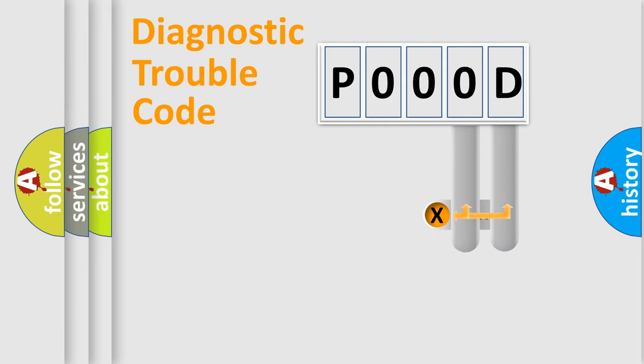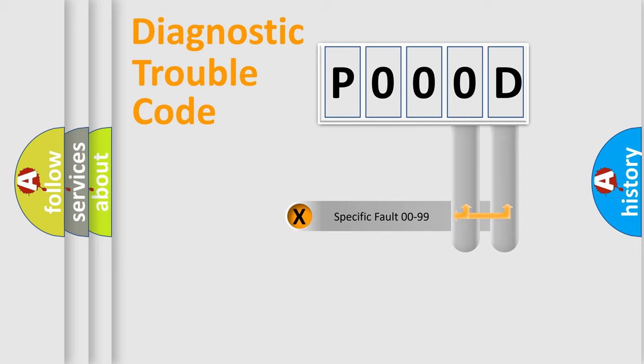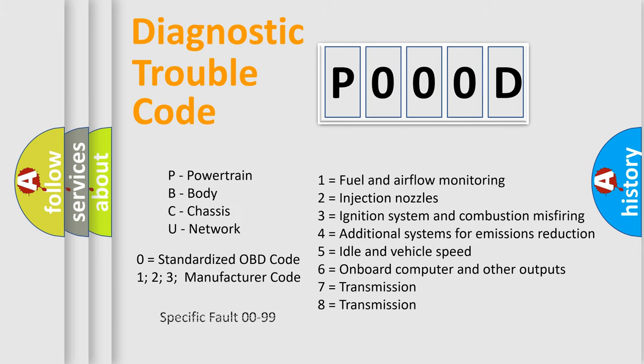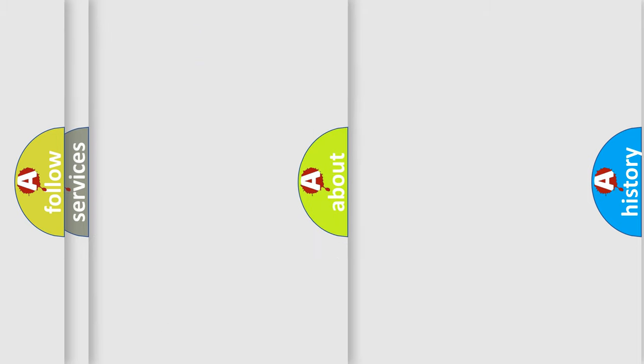Only the last two characters define the specific fault of the group. Let's not forget that such a division is valid only if the second character code is expressed by the number zero.